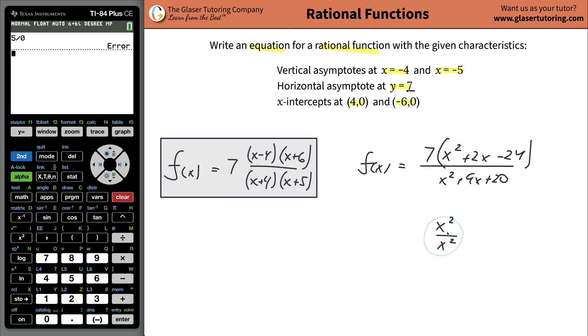Now, if you want to check, we can always go to our calculator and we can now plug in our stuff. So just now seven times, open the parentheses, x squared plus two x minus 24. Then divide it by parentheses x squared plus nine x plus 20. And then graph that bad boy. And there it is.